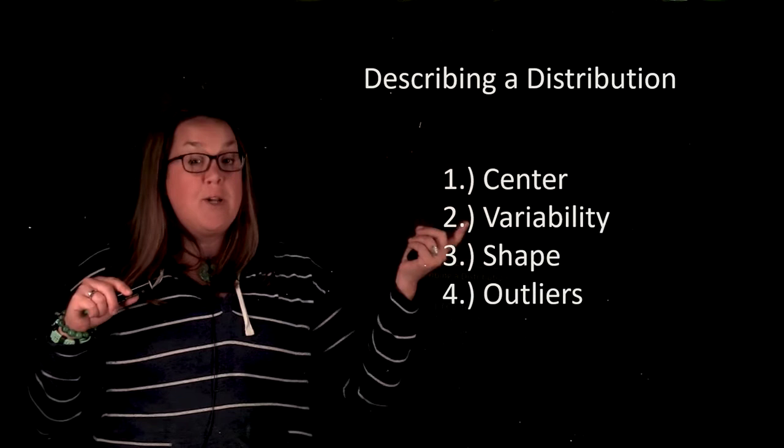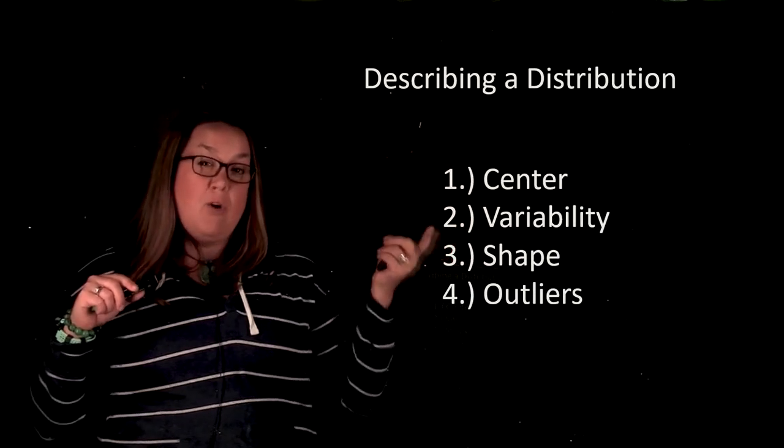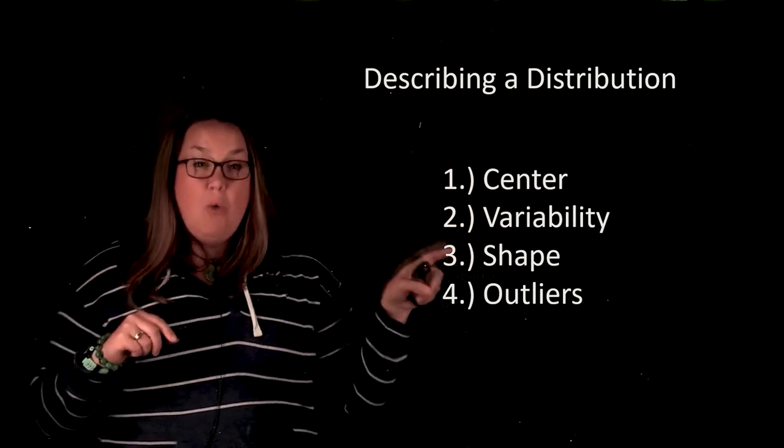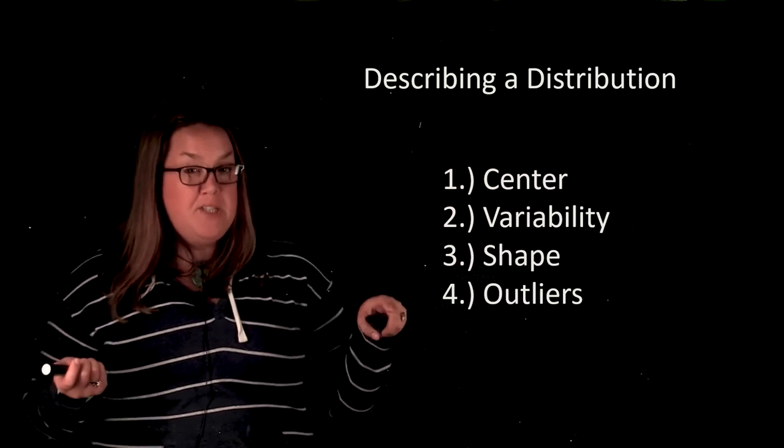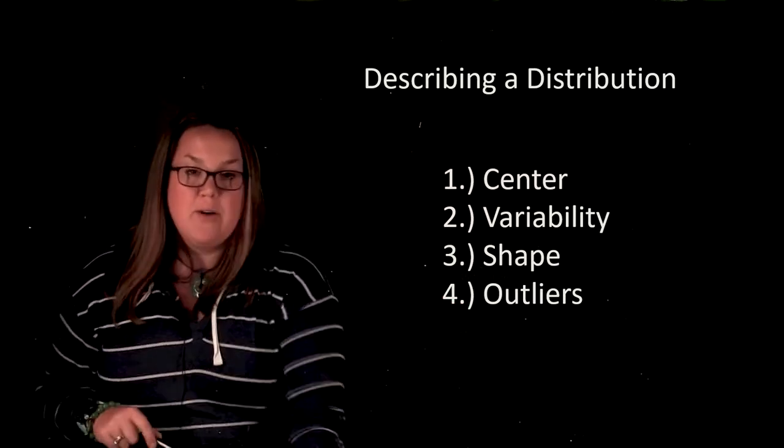So your choices for number one and two, how you describe the center or variability, would be based on the shape of the distribution and the presence or absence of outliers.